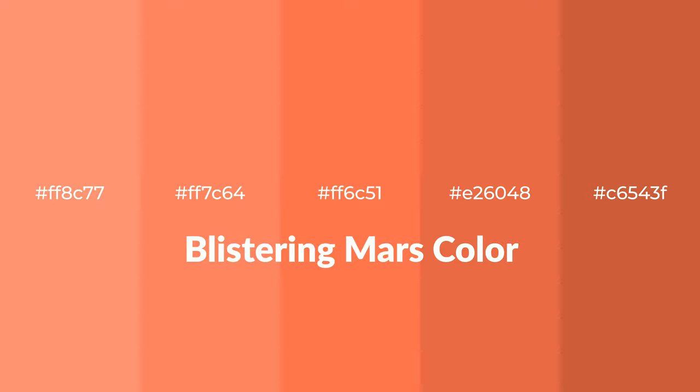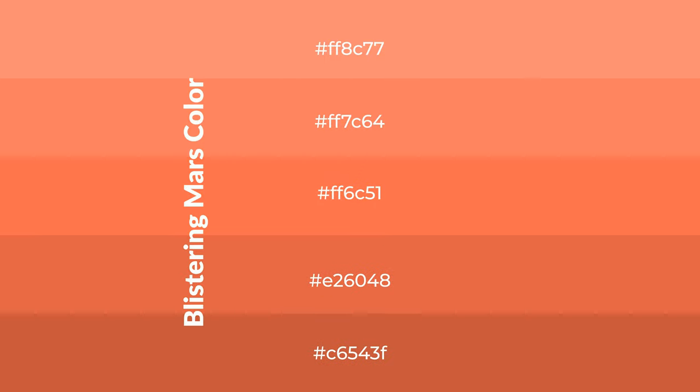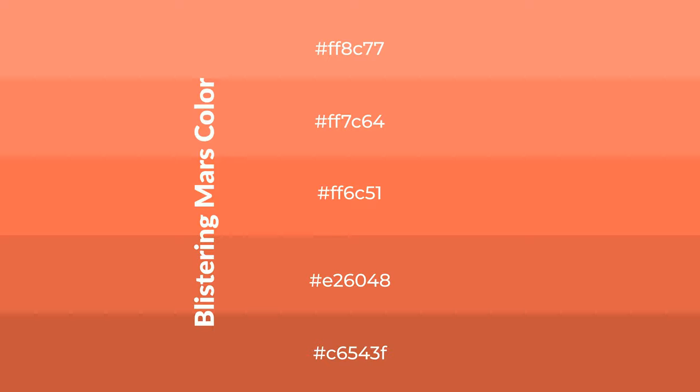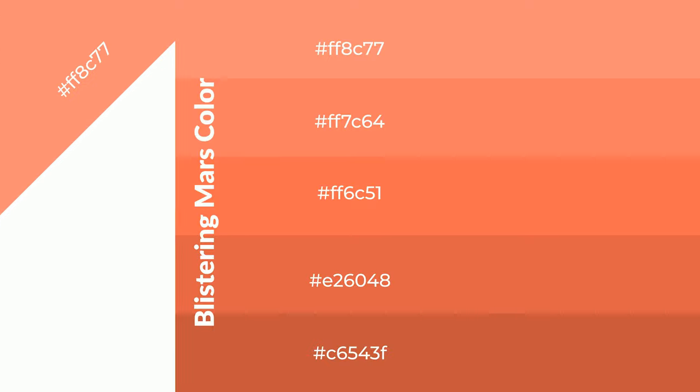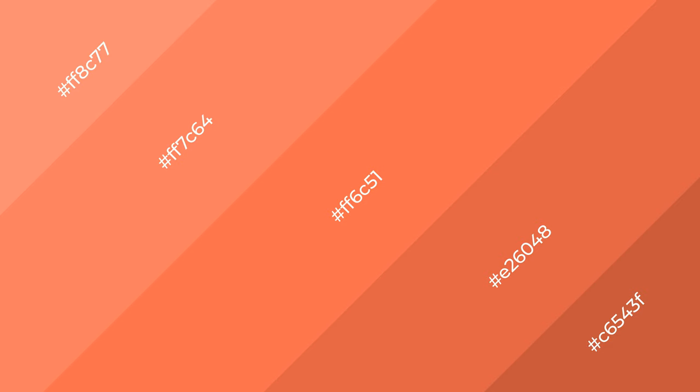Warm shades of blistering Mars color with red hue for your next project. To generate tints of a color, we add white to the color, and tints create light and exquisite emotions. To generate shades of a color, we add black to the color, and it is used in patterns, 3D effects, and layers. Shades create depth and drama.